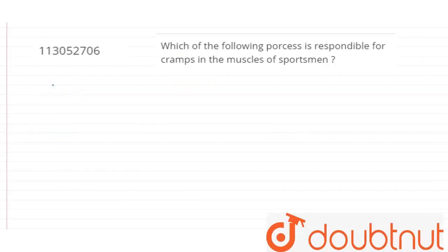Hello everyone, here our question is: which of the following processes is responsible for cramps in the muscles of a sports person? So here the question is asking what are the compounds responsible for cramps in muscles of a sports person? Basically, this question belongs to anaerobic respiration.